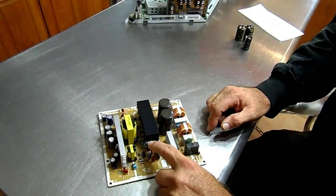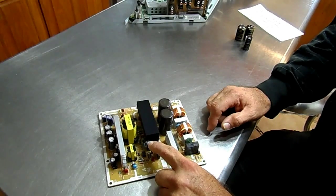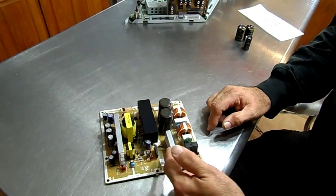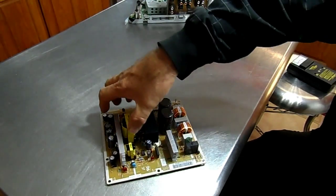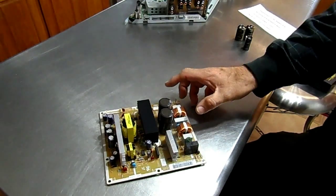This small capacitor here also has the same 150 volts on it. That's part of the standby power supply. These components in this area here are the main power supply.